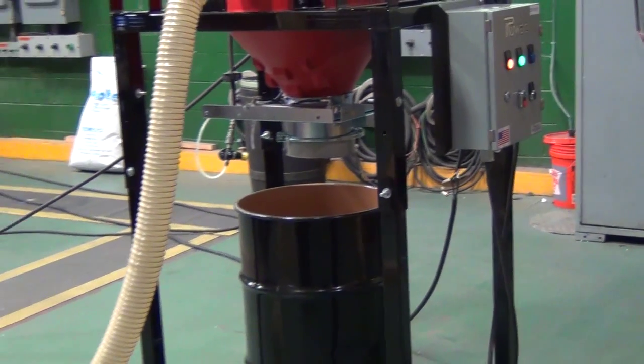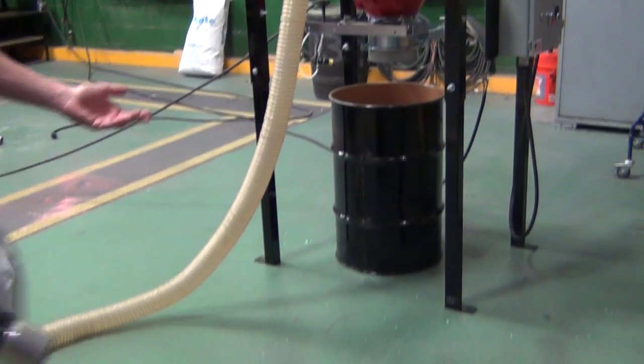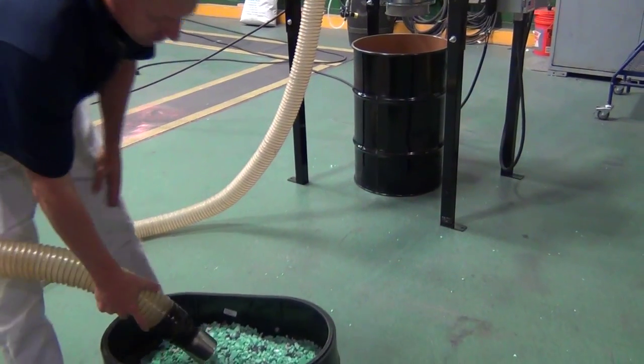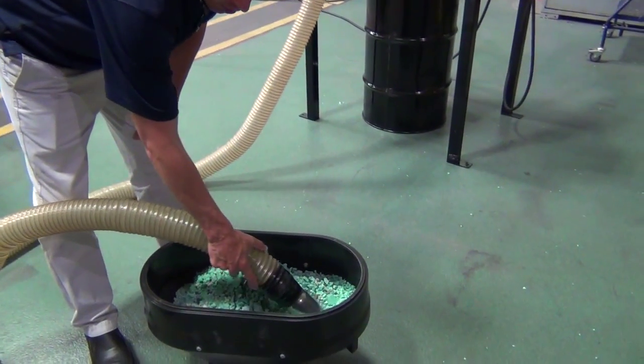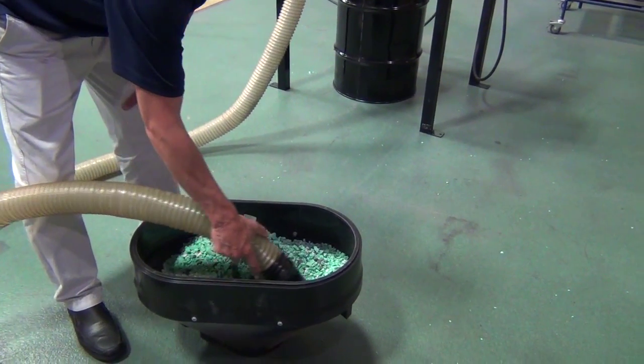Once the vacuum is on, we're drawing about 300 CFM, 11 inches of mercury. So we can pick up a lot of bulk material quickly in this system.